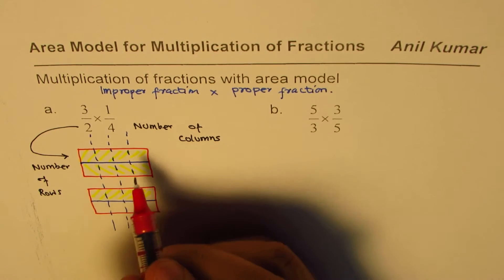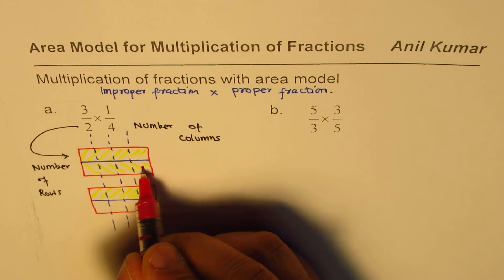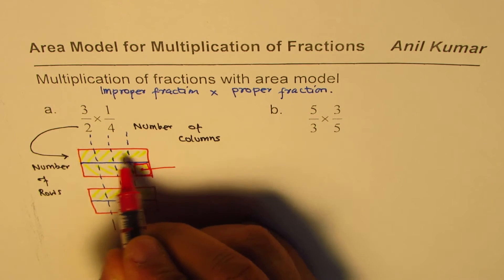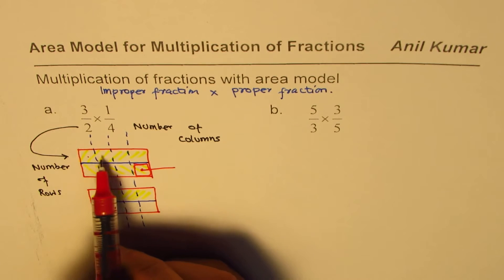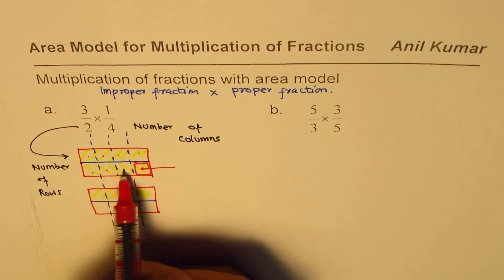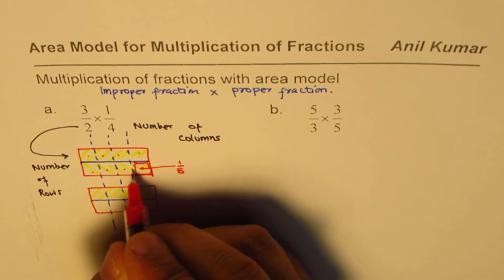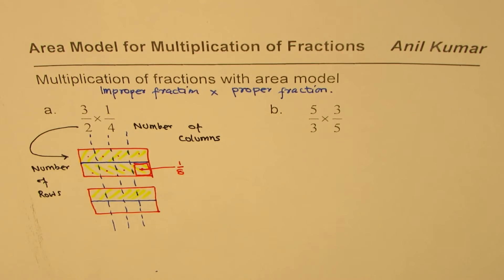Now, can you tell me how much is each part? How much is this small square area as compared to the whole area? 1, 2, 3, 4, 5, 6, 7, 8. This is 1 out of 8. Do you see that? Each part is 1 eighth. So remember that.